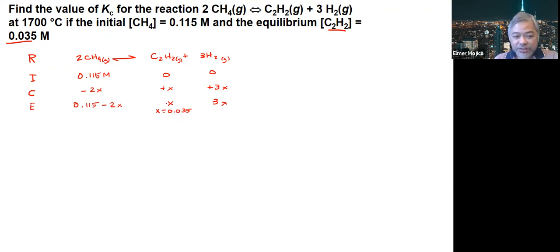So we can now substitute all the X there with the value of 0.035. So we could say this is 0.115 minus 2 times 0.035, and this is just 3 times 0.035. So if we're going to look at the values that we have, this is 0.035 at equilibrium, 3 times 0.035 is 0.105.